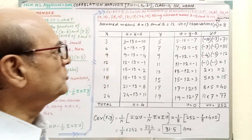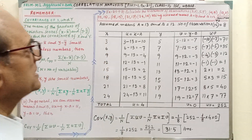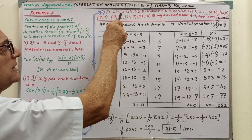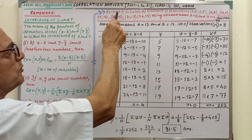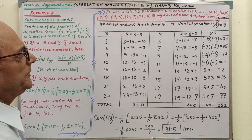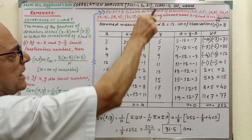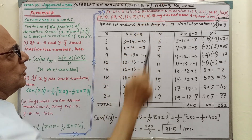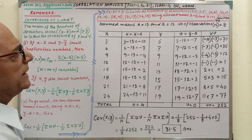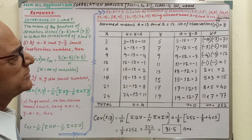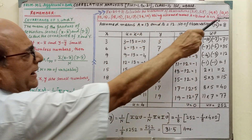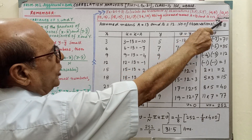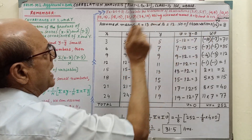Now, pay your attention on the sums given from Exercise 2.1, Sum number 3. You will get the sum in your book and here also it is written clearly. Now pay your attention on the solution.